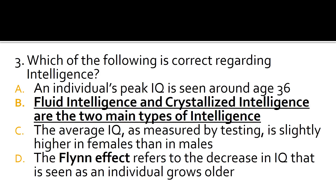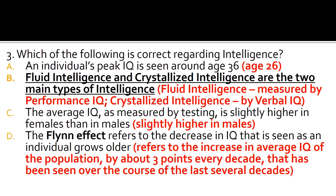Fluid intelligence and crystallized intelligence are the two main types of intelligence. A is false because an individual's peak IQ is seen around the age of 26. C is false because the average IQ is slightly higher in males. D is false because the Flynn effect refers to the increase in average IQ of the population by about three points every decade, seen over the last several decades.